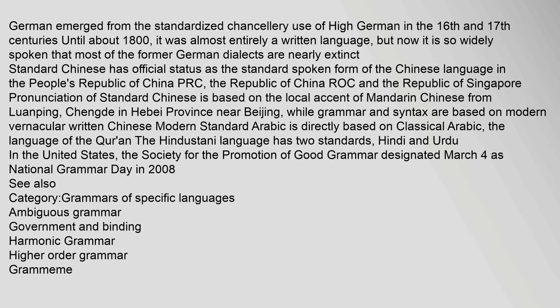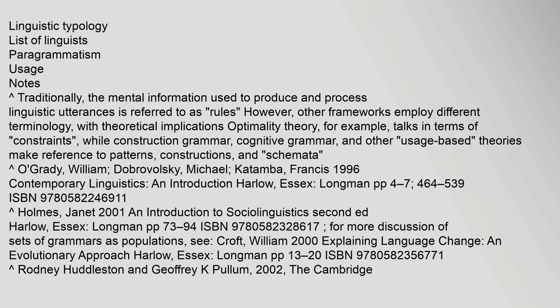See also: Grammars of Specific Languages, Ambiguous Grammar, Government and Binding, Harmonic Grammar, Higher Order Grammar, Linguistic Typology, List of Linguists, and Paragrammatism. Usage notes: traditionally, the mental information used to produce and process linguistic utterances is referred to as rules. However, other frameworks employ different terminology with theoretical implications. Optimality Theory, for example, talks in terms of constraints, while Construction Grammar, Cognitive Grammar, and other usage-based theories make reference to patterns, constructions, and schemata.